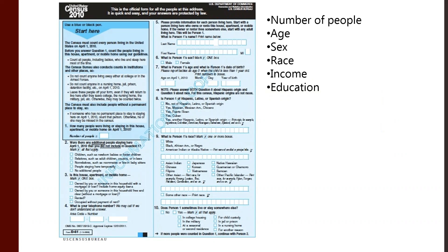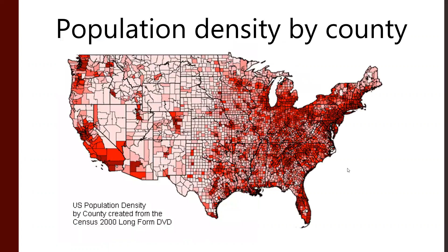The American Community Survey, for example, covers more information including income, education, and how you commute to work. Every country operates and conducts its census differently, collects different data, and has different problems. Here's population density from the 2000 census.